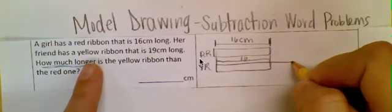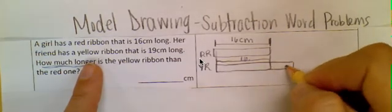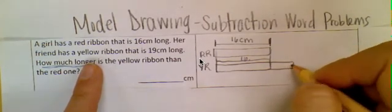So this box, or bar, is actually going to be just a little bit longer, because this whole thing is 16, and then this little extra part is going to represent the extra.